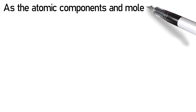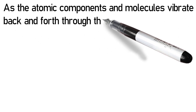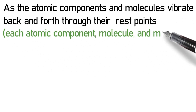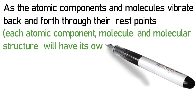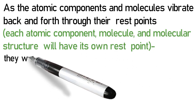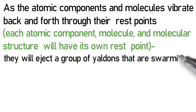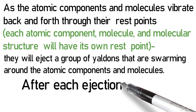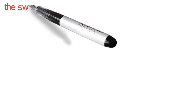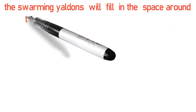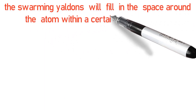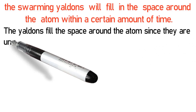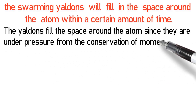As the atomic components and molecules vibrate back and forth through their rest points, each atomic component, molecule, and molecular structure will have its own rest point. They will eject a group of Yaldins that are swarming around the atomic components and molecules. After each ejection from the oscillation of the atom, the swarming Yaldins will fill in the space around the atom within a certain amount of time.